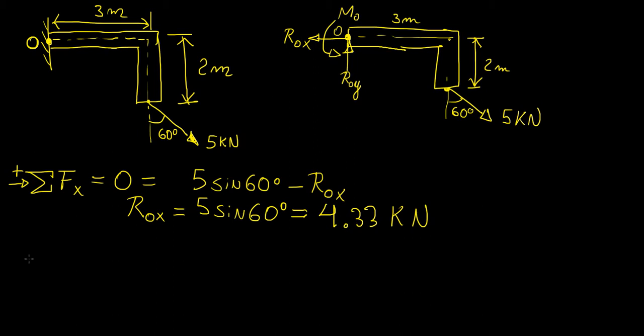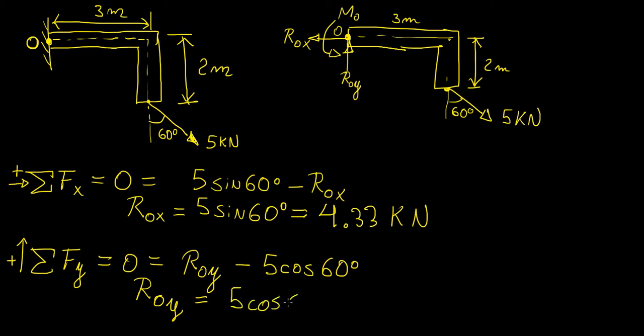Now for the next one let's do the sum of the forces in the y direction. So that means we're going to assume that up is positive. So next thing we have is ROY and the vertical component of this force which is 5 cos 60°. So ROY is equal to 5 cos 60°. And if we plug that into a calculator that's going to give us 2.5 kilonewtons.